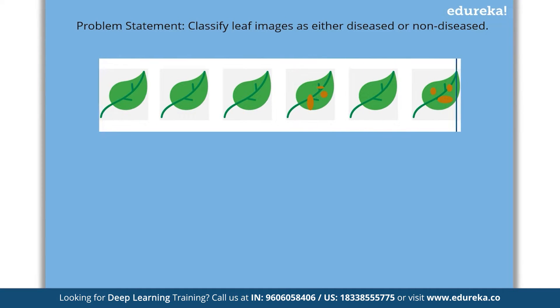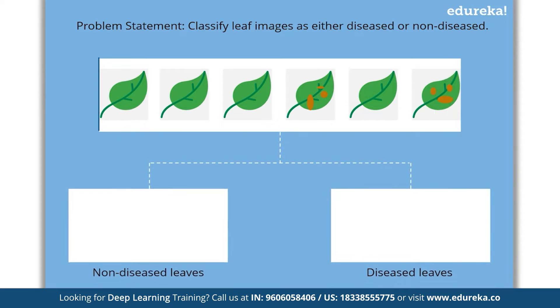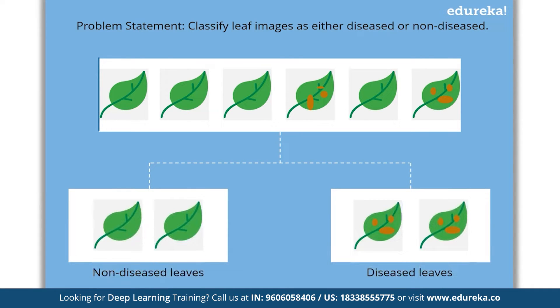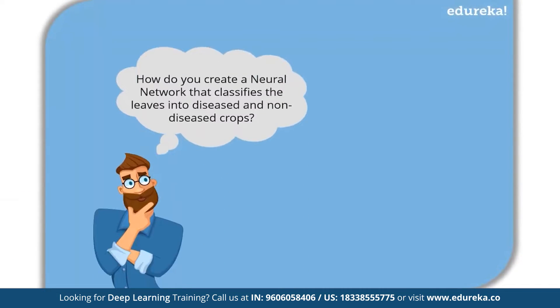Consider a scenario where you have been given a set of labeled images and you have to classify them into two classes — one class containing images of non-diseased leaves and the other class containing images of diseased leaves. So how would you create a neural network that classifies the leaves into diseased and non-diseased crops?